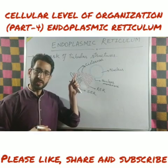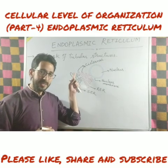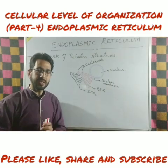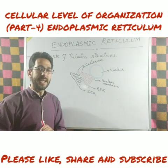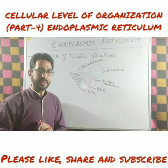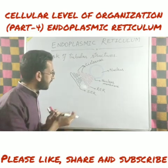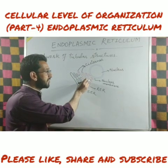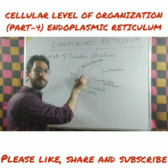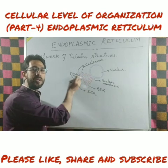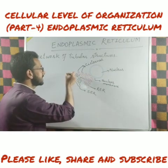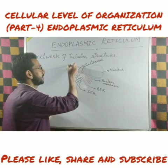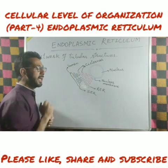These tubular structures are called as cisternae and the network of these tubular structures is called as the endoplasmic reticulum. These tubes or tubular structures have a hollow space inside and that hollow space is called as the lumen of endoplasmic reticulum.